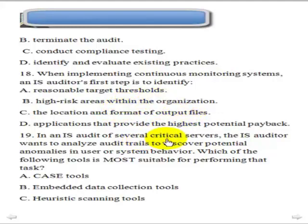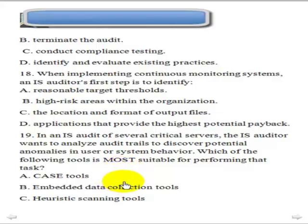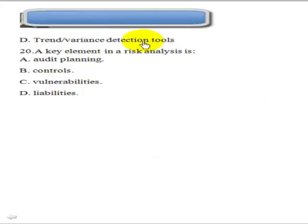Question 19: An IDS needs to analyze all traffic to discover potential anomalies — unusual behavior in users or systems. Which tool is most suitable? CASE tools are used for system development, so they won't work here. Embedded data collection tools can gather exceptions in an online environment. Heuristic scanning tools are used for antivirus. The trend or variant detection tool is the best answer because it monitors trends, and when behavior changes from normal to abnormal, it picks it up. The answer is D, trend/variant detection.